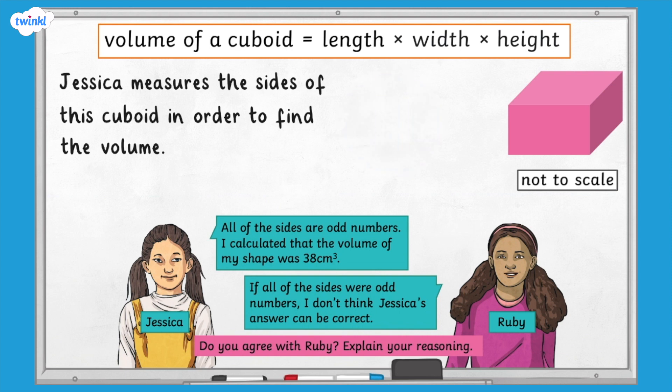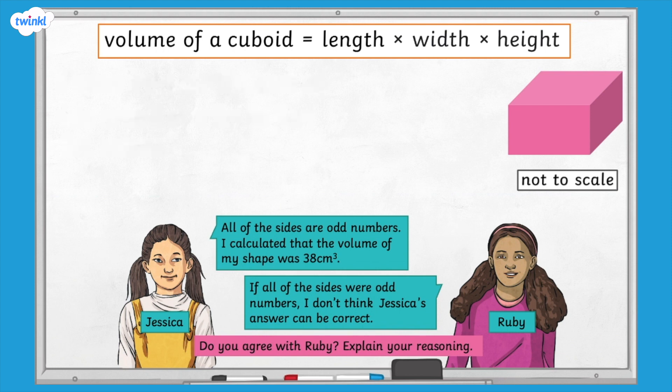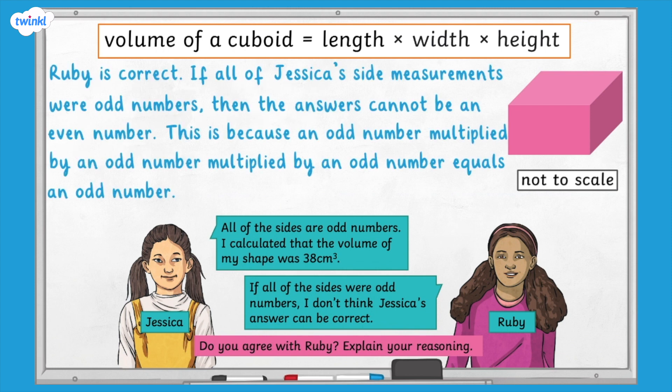Have you finished? Well done. Here's the answer. Ruby is correct. If all of Jessica's measurements were odd numbers, then the answer cannot be an even number. This is because an odd number multiplied by an odd number multiplied by an odd number equals an odd number.